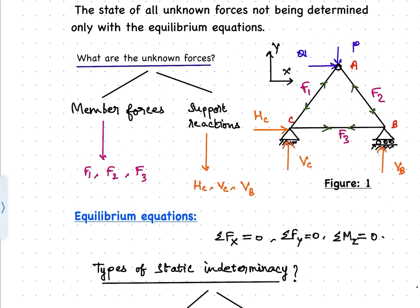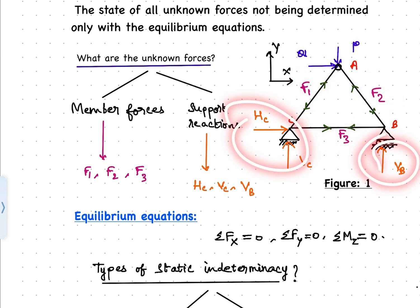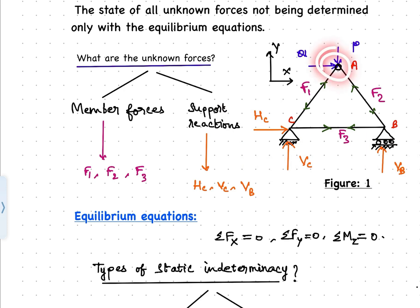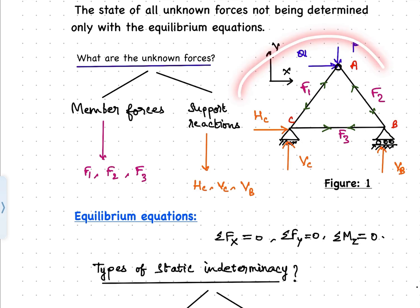In Figure 1, we have three member forces and three reactions, which adds up to six. As there are three joints — A, B, and C — we get 2 times 3, giving six equilibrium equations. Therefore, M plus R equals 2J, and hence this truss system is internally and externally determinate.